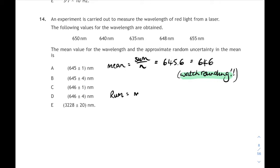We also need the random uncertainty in the mean. This relationship's on your relationship sheet. It's the maximum minus the minimum reading divided by the number of readings. The biggest one was 655, the smallest one was 635. So 655 take away 635 is 20, and 20 divided by 5 gives us a random uncertainty in the mean of 4. So writing that out in full, it would be 646 plus or minus 4 nanometers. And that corresponds to answer D.